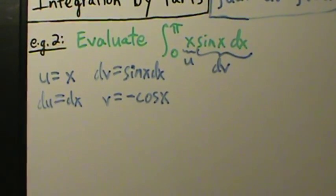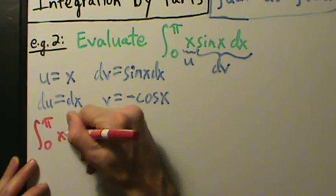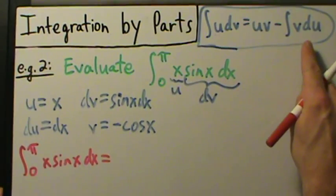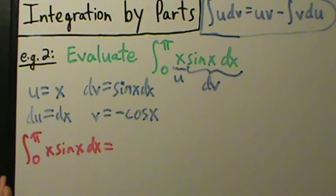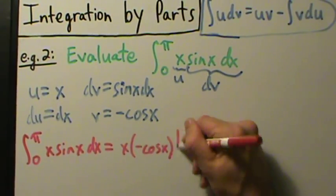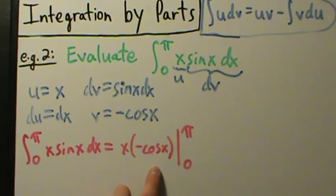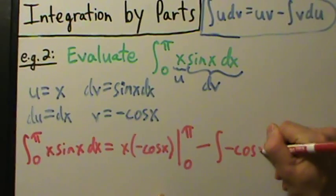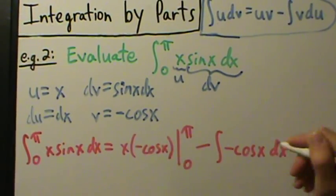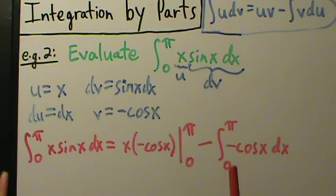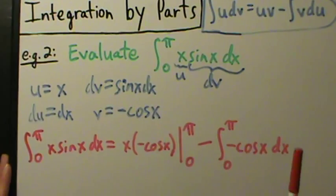So let's evaluate this integral. The integral from 0 to π of x sine of x dx uses the same formula: integral of u dv equals uv minus the integral of v du, just with limits of integration now. So this is uv — which is x times negative cosine of x — evaluated from 0 to π, minus the integral of v du, which is negative cosine of x times dx, integrated from 0 to π. That's the only difference — just the limits of integration.